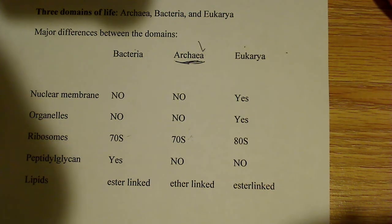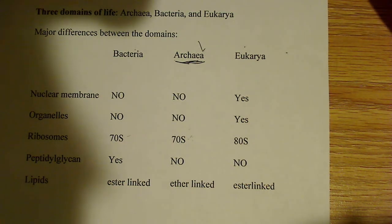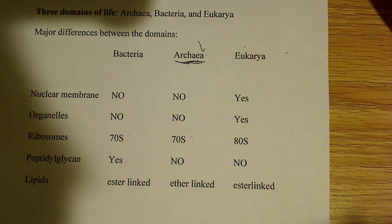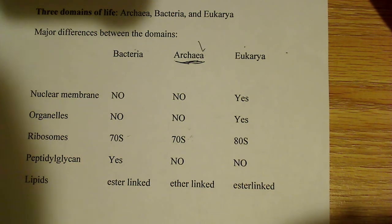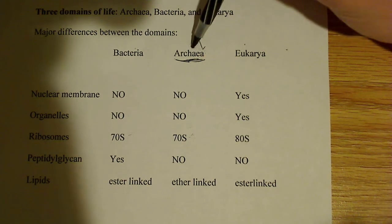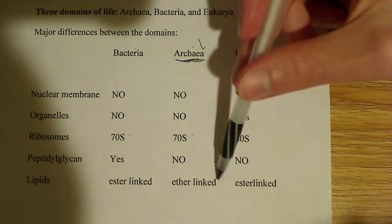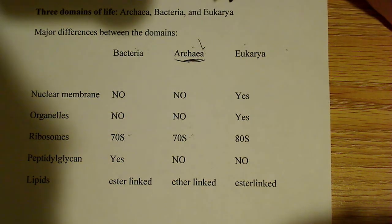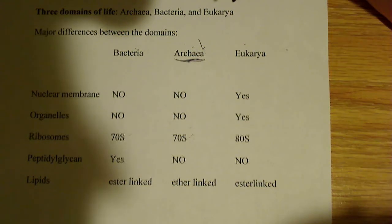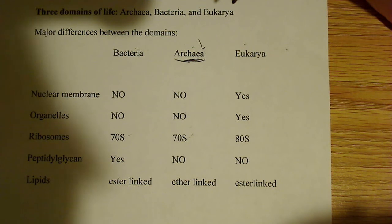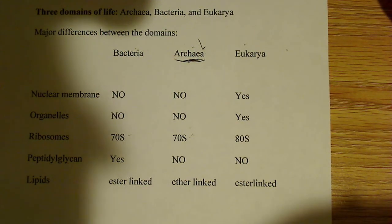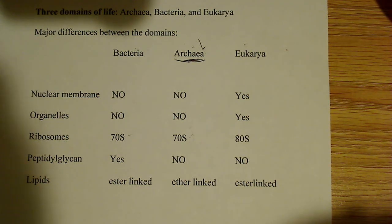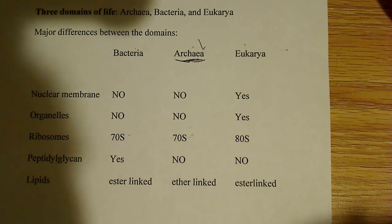Regarding lipids: bacteria and eukaryotes have ester-linked lipids, meaning the fatty acid chains attached to the glycerol backbone are connected by ester bonds. But in archaea, the lipids are ether-linked, not ester-linked. These ether-linked lipids are actually a lot stronger, which makes sense because archaea are generally found in very harsh conditions — extremes of temperature and pH — conditions that bacteria and eukaryotes wouldn't survive. One of the things that helps them survive is these ether-linked lipids.